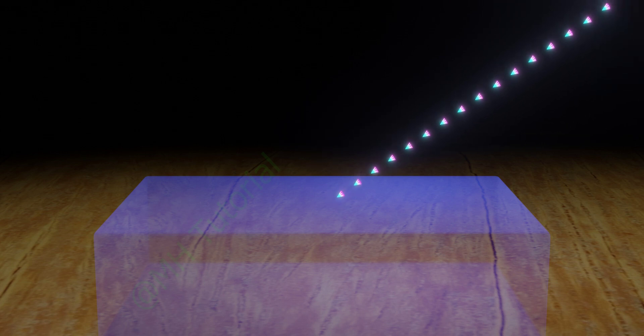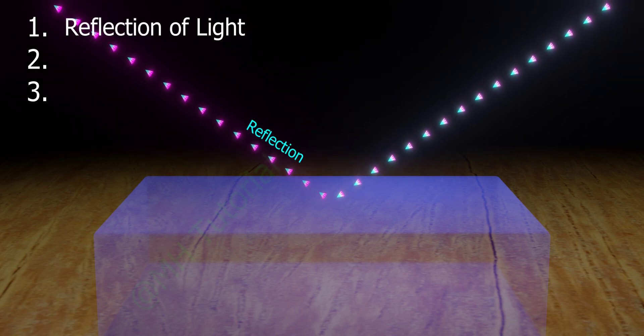When a ray of light approaches an interface of another medium, three different incidents may occur. A portion of the ray travels back to first medium. It is called the reflection of light.